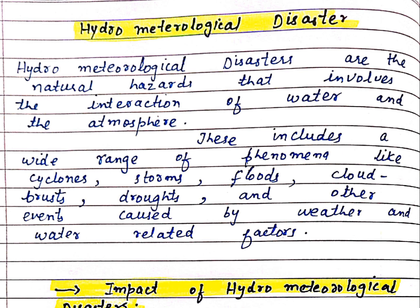Hydrometeorological disasters are the natural hazards that involve the interaction of water and the atmosphere. These include a wide range of phenomena like cyclones, storms, floods, cloudbursts, droughts, and other events caused by weather and water-related factors.